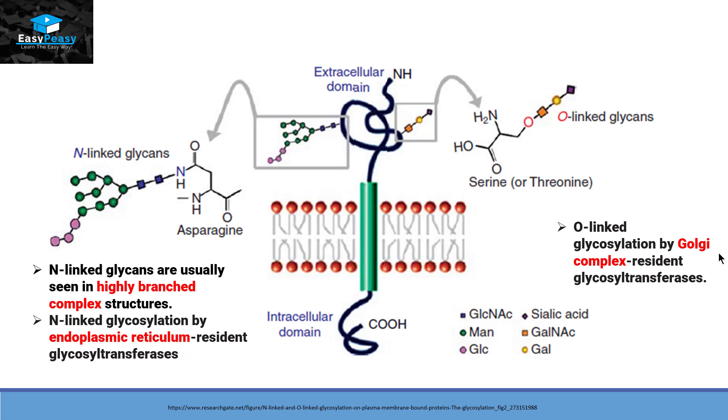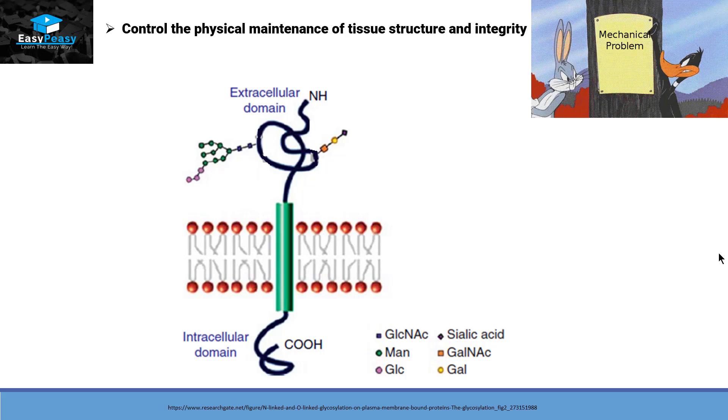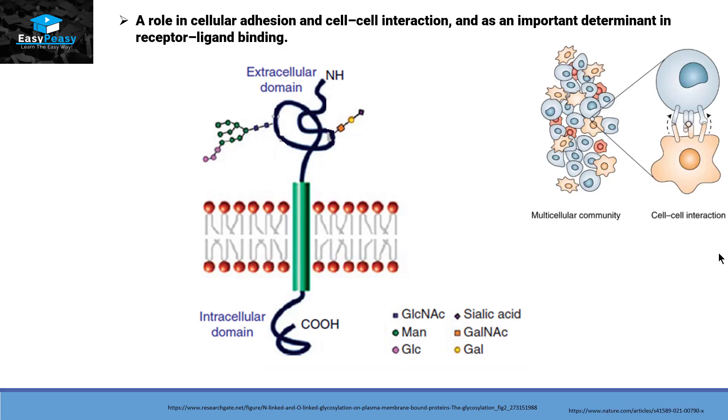These glycans, when they are going to attach themselves with protein, they usually stabilize the structure of that protein. They can also help in the prevention of degradation of that protein by proteases. They can also control the physical maintenance of tissue structure and integrity. And as they are mostly present on the surface of the cell, they can help in cell recognition, receptor ligand binding, and cellular adhesion.